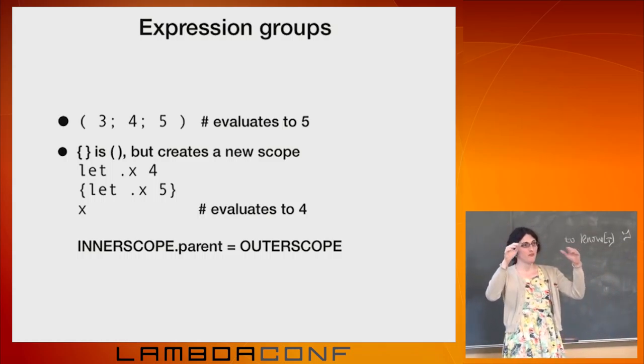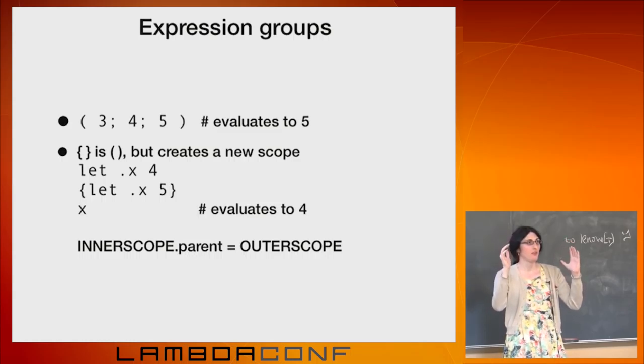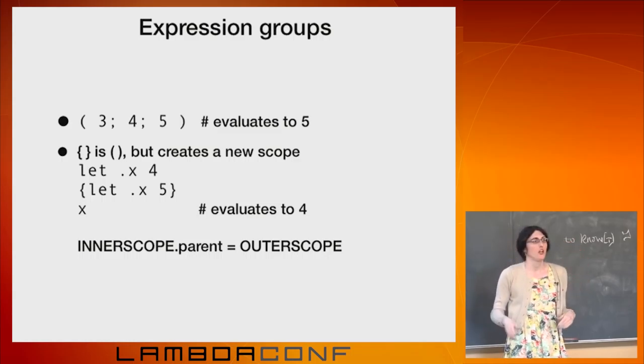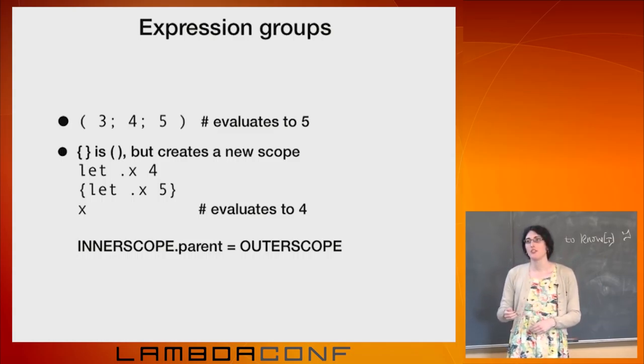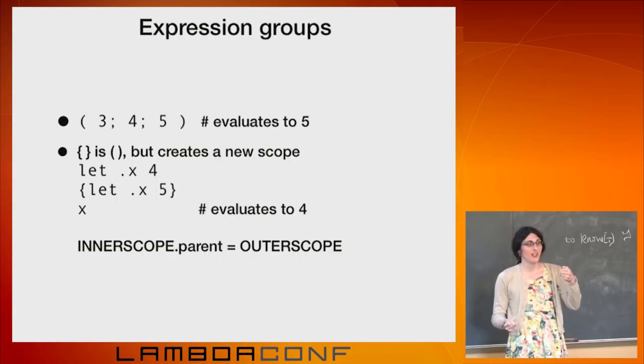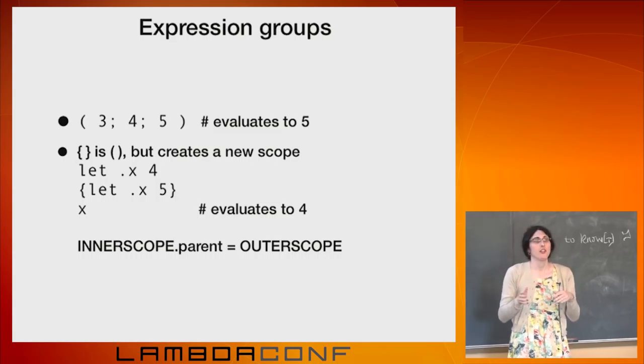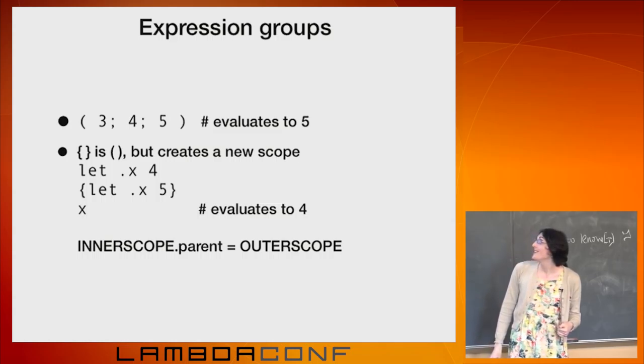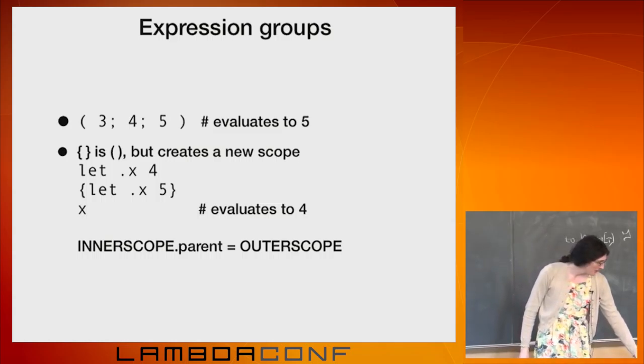Curly braces do something a little more interesting. So the parentheses form an expression inside of themselves, and the parentheses can allow you to have these sequence statements, some of which are ignored. The curly brace is the exact same as the parentheses, but within the curly brace, you're using a new scope. And what I'm actually going to say happens here is that when you get to the left curly brace, it creates a new scope object, sets that scope object's parent to the enclosing scope, and then you're using that scope for the remainder of the closer. So I've just implemented scope hierarchy with object inheritance, which is kind of amusing to me.